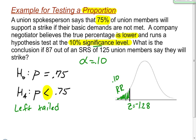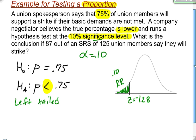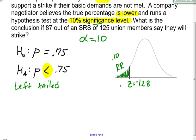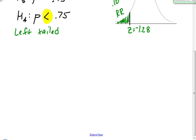The reason I create this rejection region is because I'm now going to find something called a test statistic. When I find the test statistic, if that test statistic lands inside this rejection region, I will reject my null hypothesis. If the test statistic lands to the right of this rejection region, then I will retain my null hypothesis — I will not reject it. So let's go ahead and find the test statistic.